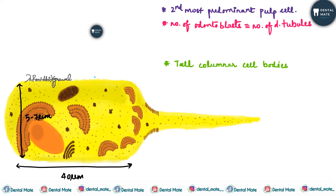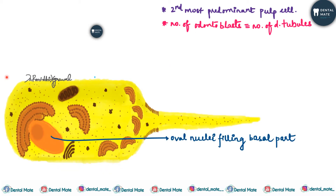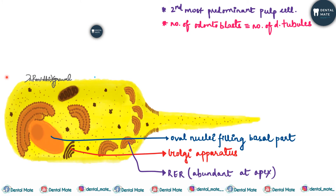Their length or height is about 40 micrometers, with a width of 5 to 7 micrometers near the base of the cell, and about 3 to 4 micrometers near the apex. They have oval nuclei filling the basal part of the cell, along with Golgi apparatus and rough endoplasmic reticulum, which are abundant at the apex.